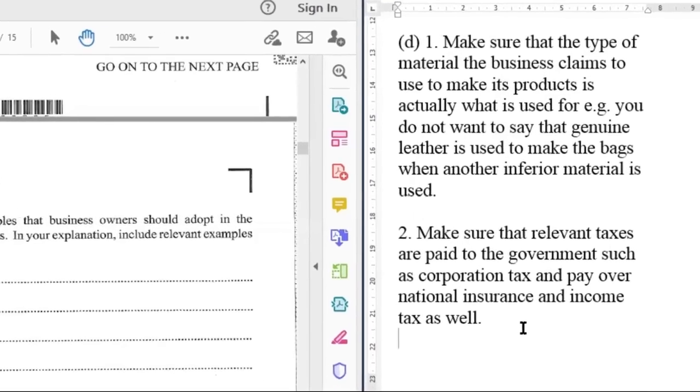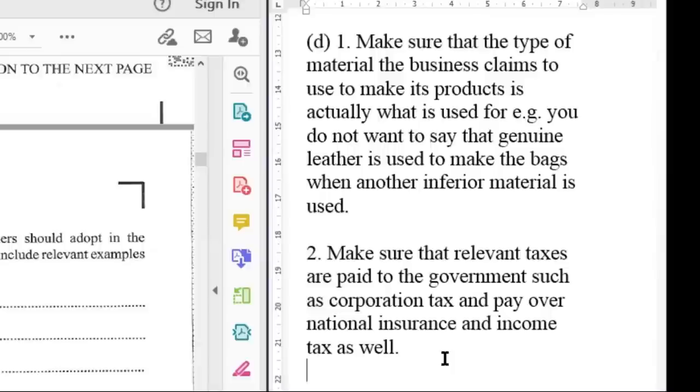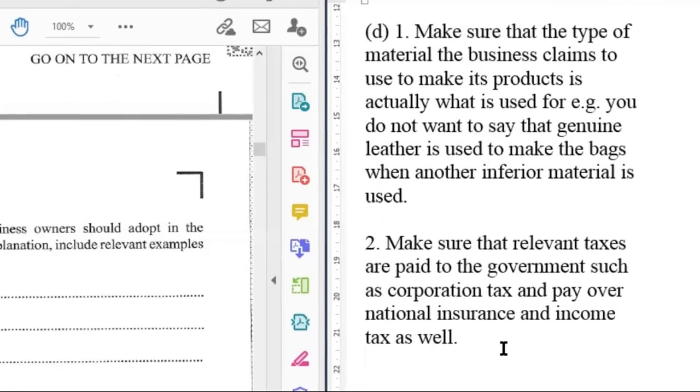The type of material that the business claims to use to make its products should actually be what is used. For example, if it says it uses genuine leather to make its bags, that it's genuine leather being used and not any inferior material. The second is to make sure that relevant taxes are paid to the government, such as corporation tax and pay over national insurance and income tax as well.